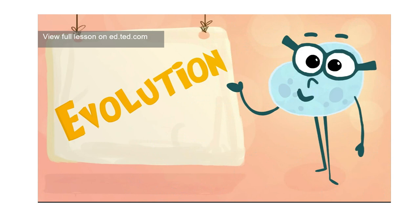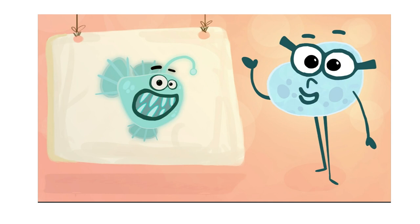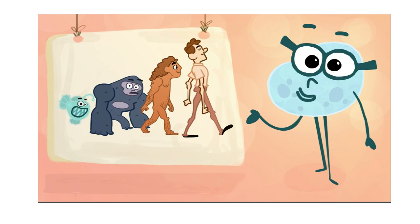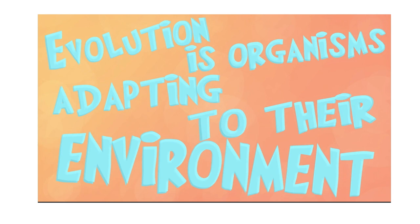Let's talk about evolution. You've probably heard that some people consider it controversial, even though most scientists don't. But even if you think you have a pretty good understanding of evolution, chances are you still believe some things about it that aren't entirely right — things like evolution is organisms adapting to their environment. This was an earlier, now discredited theory of evolution.